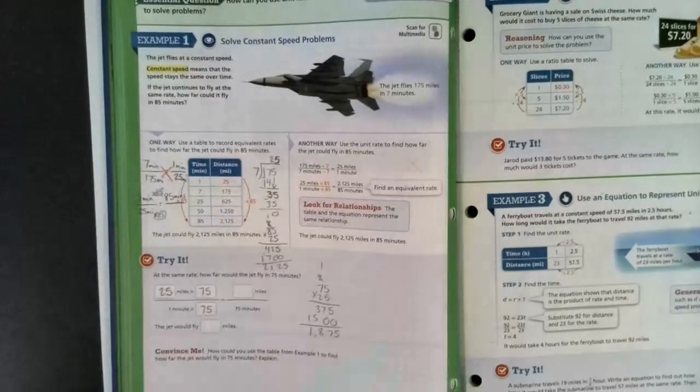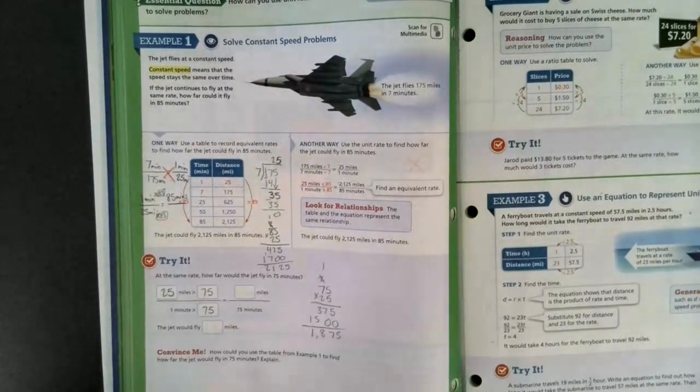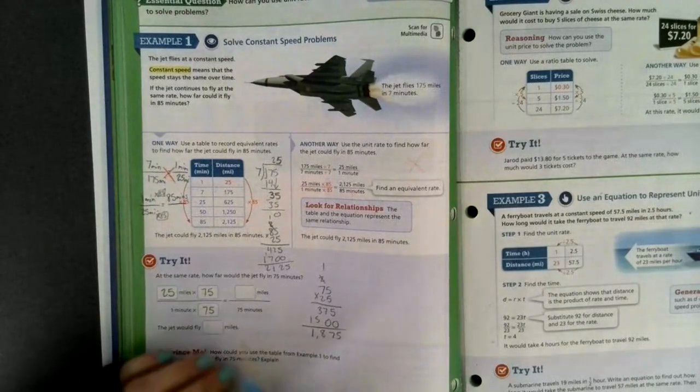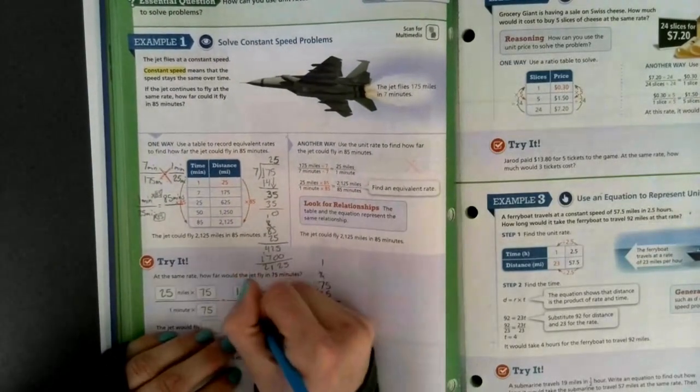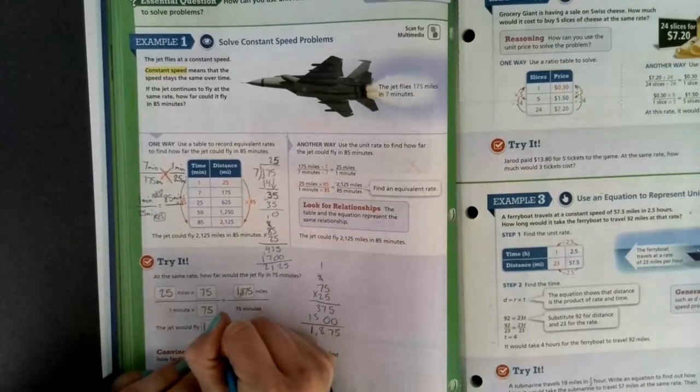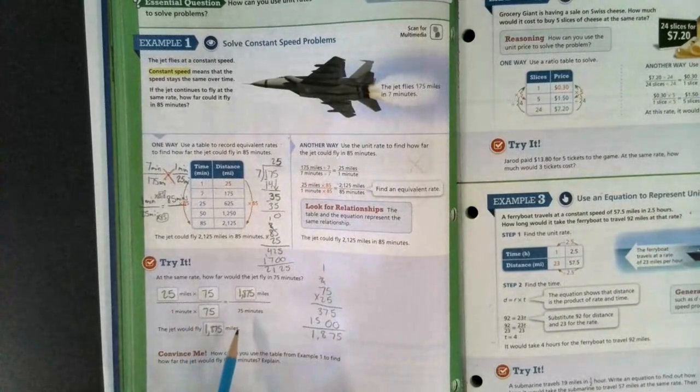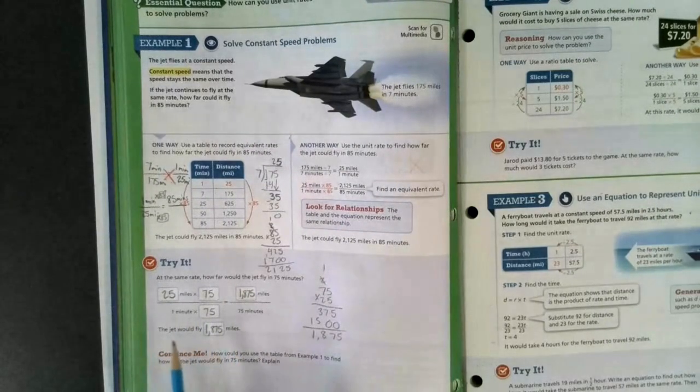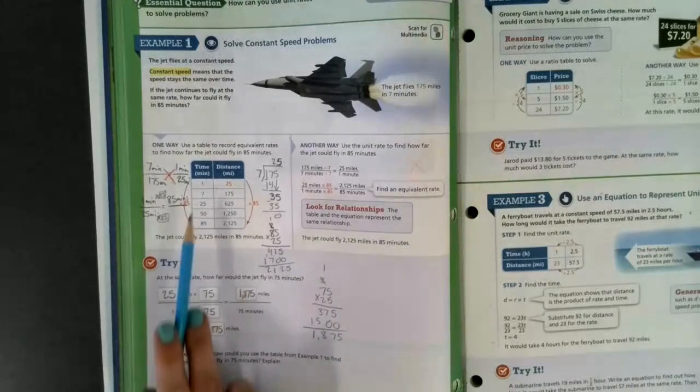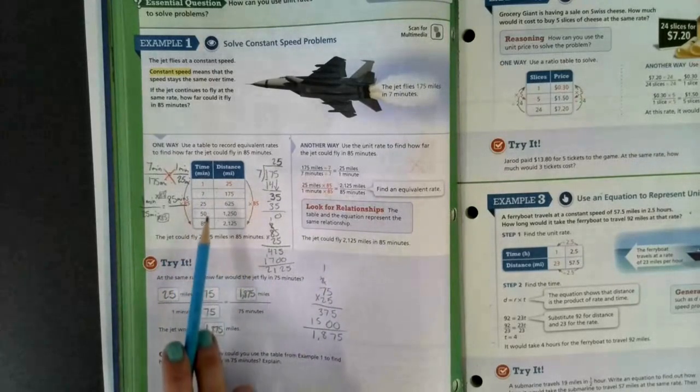Hopefully you're following along and doing this on your paper as well. You can use calculators. I'm just doing it by hand to show how quick and easy it is. All right, I get 1,875. So I know the jet would fly 1,875 miles in 75 minutes. If you have your chart made, you also could have used this. A few different ways to help you solve it.